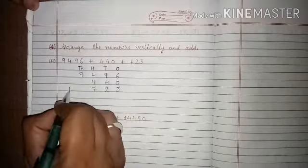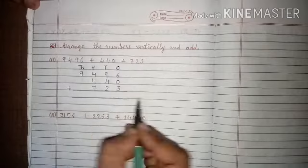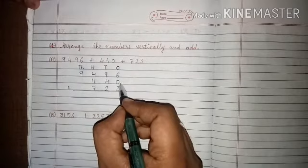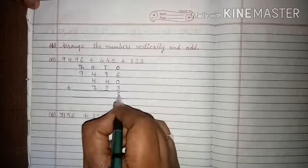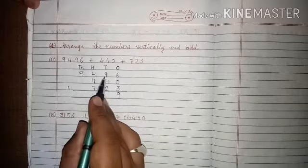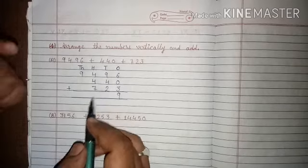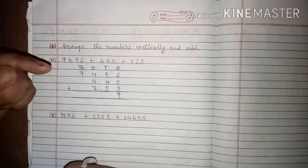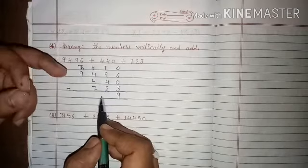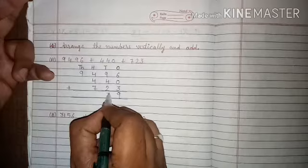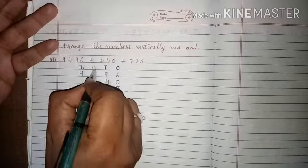Now what will we do with these? We will add them. For addition: 6 plus 0 is 6, then add 3 — 6 plus 3 is 9. Then 9 plus 4 is 13. Now we add 2 to 13 — that gives 15. We write 5 here, and 1 becomes carry.